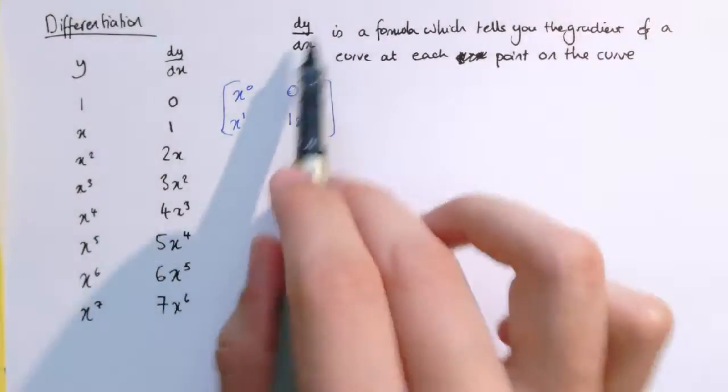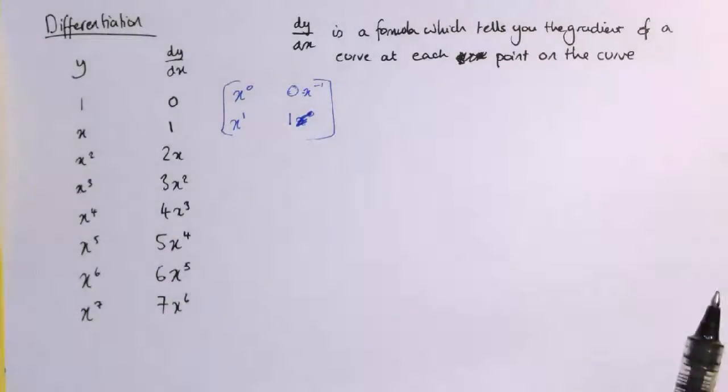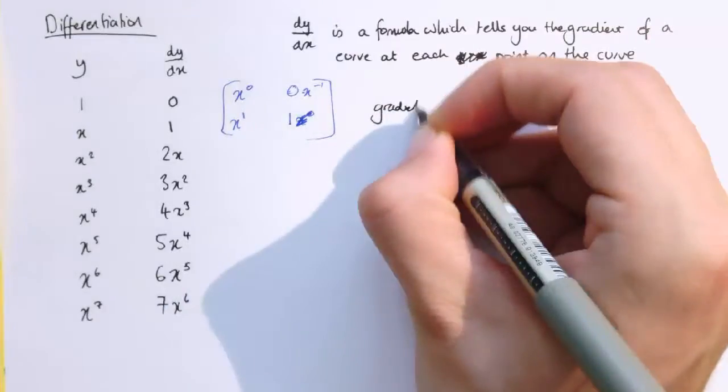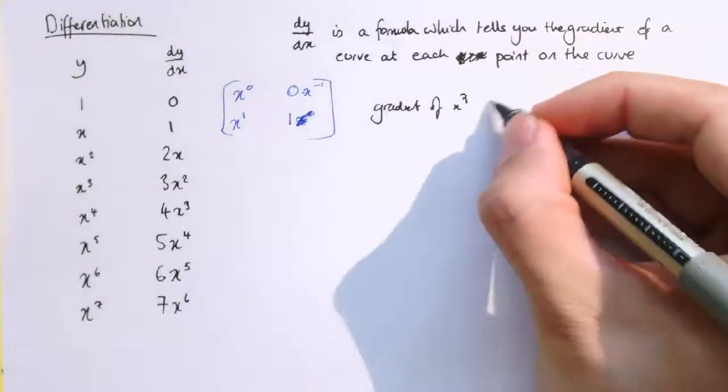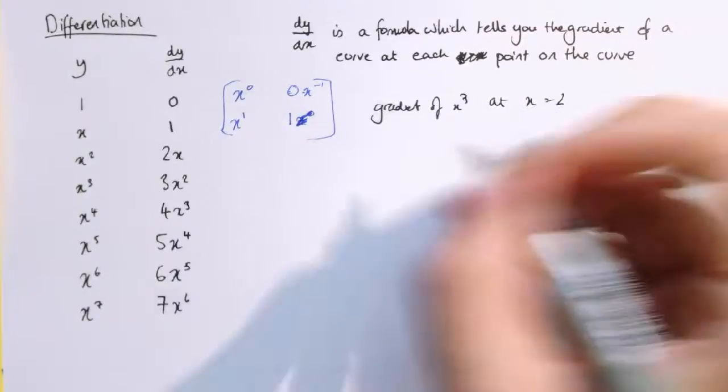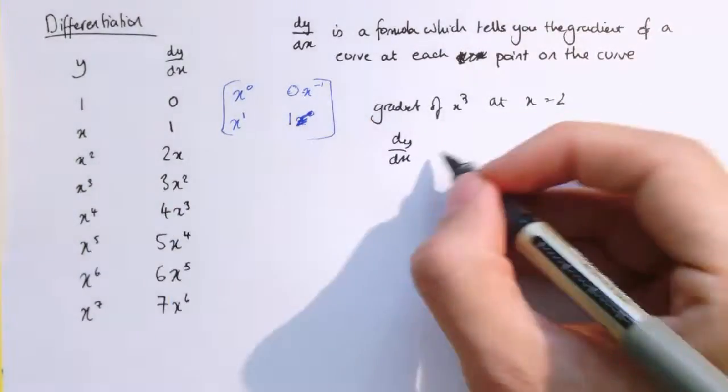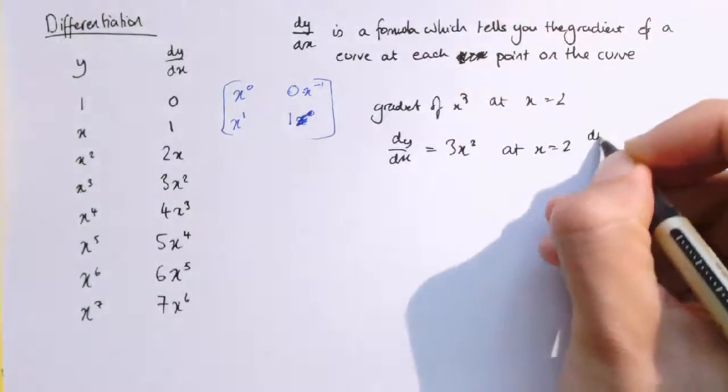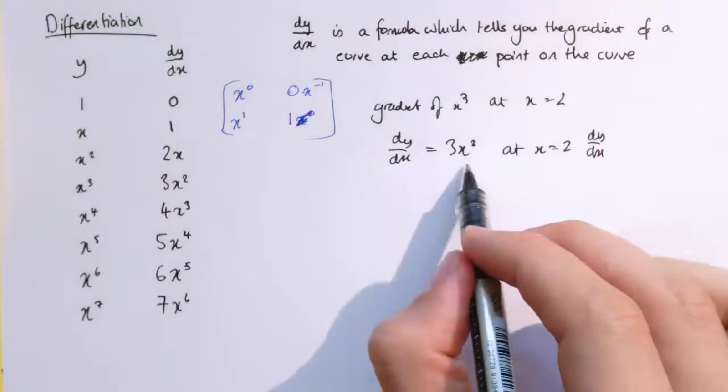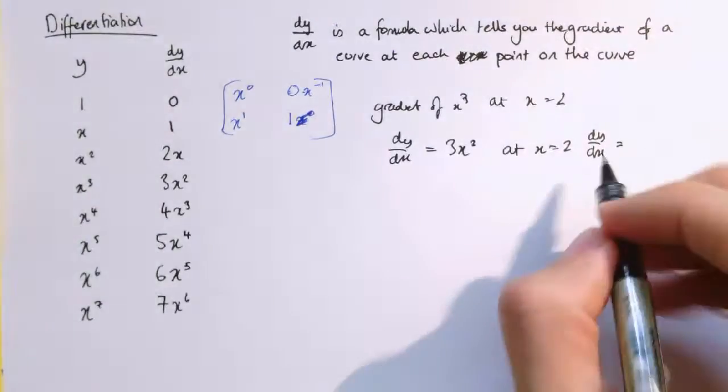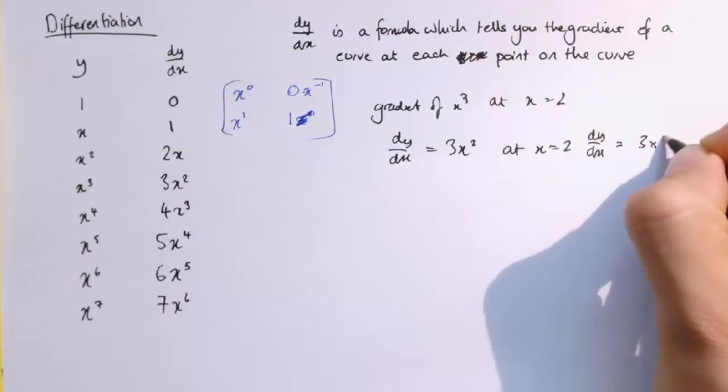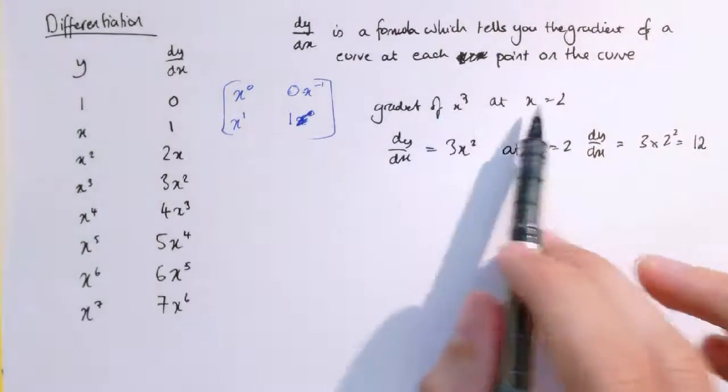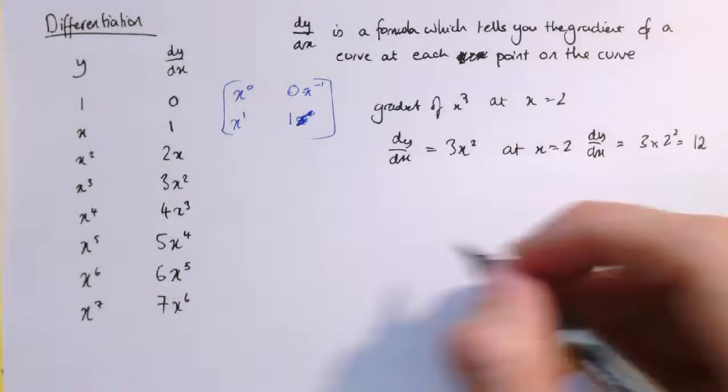So the way this works, then, I said dy/dx is a formula that tells you the gradient of the curve at each point on the curve. So actually, if I wanted the gradient of x cubed, say, at x equals 2, well, looking at this list, dy/dx equals 3x squared, and then at x equals 2, well, I just substitute in 2 to this formula, and that will tell me the gradient dy/dx, that's 3 times 2 squared, or 3 times 4, which is 12.